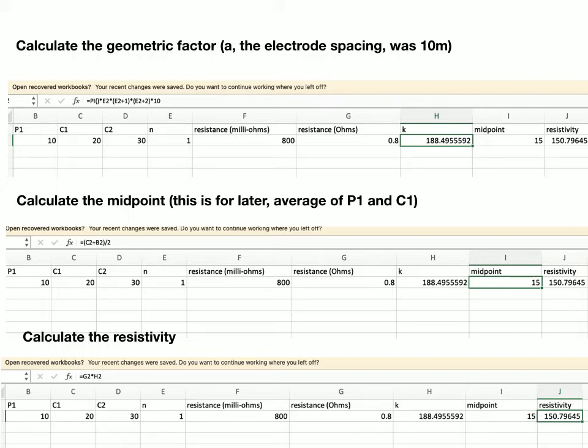My midpoint between them is 15. And I can calculate that just by doing the average, as shown in this formula here. The last step, then, is to calculate the resistivity. And the resistivity is purely our resistance in ohms times this geometric factor will give us resistivity, which is my last column here.